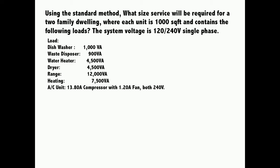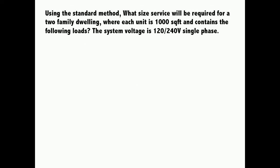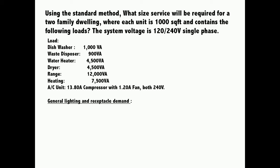We're going to apply demand factors for each load. The first thing we're going to take into account is the general lighting and receptacle load. For general lighting and receptacle, we should take into consideration the occupancy, and the occupancy demand is 3 VA per square feet. For this two-family dwelling we have two floors, so we would have twice the amount applied on each floor. For one floor it is 1,000 square feet, so applying 3 VA per square feet results in 3,000 VA per demand for one floor.